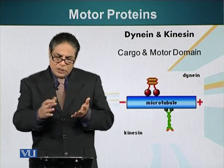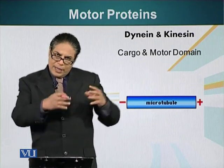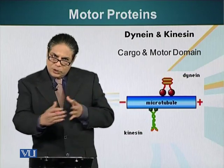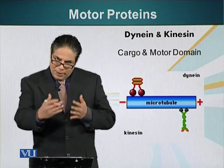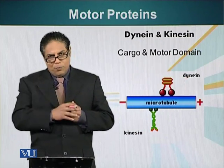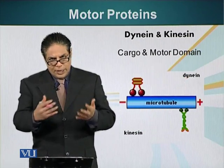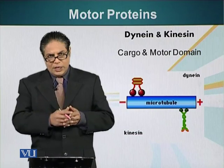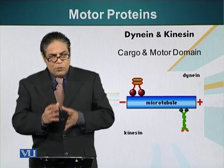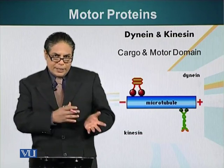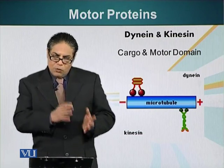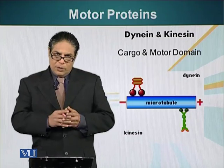As we have established, the minus end of the microtubule is towards the cell center, whereas the plus end is towards the cell periphery or the plasma membrane. For sake of generalization, we can say dynein motor proteins move towards the minus end of the microtubule, and kinesin motor proteins move towards the plus end of the microtubule.